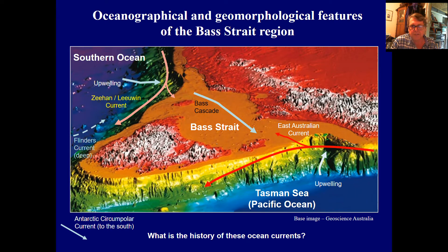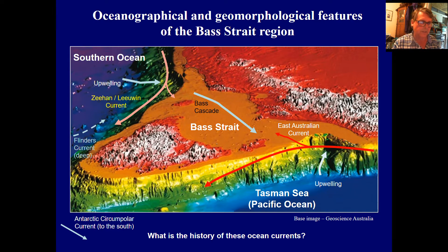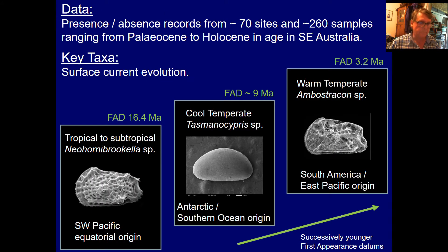By studying the biogeography of these organisms and their stratigraphic occurrences through time, we can start to unravel the history of ocean currents within a region. The particular region we're looking at is the Bass Strait Seaway, and some of the currents I'll be talking about are the East Australian Current, the Lewin Current and its extension the Zean Current, the Bass Cascade, and the Antarctic Circumpolar Current. Some of the most important occurrences of these epiphytal microfossils are their first appearance data, because they're telling us something about the first time these taxa migrated into this region.